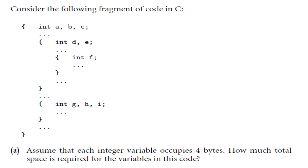The question goes like this: consider the following fragment of code in C. The question is, assume that each integer variable occupies four bytes. How much total space is required for the variables in this code?